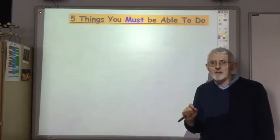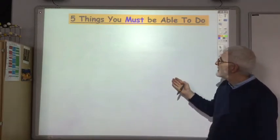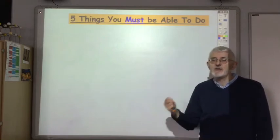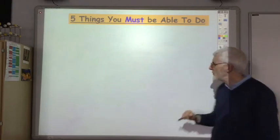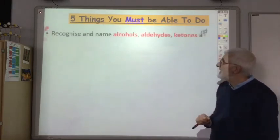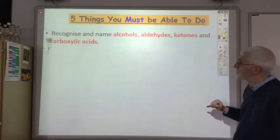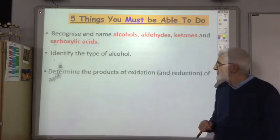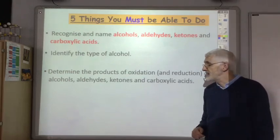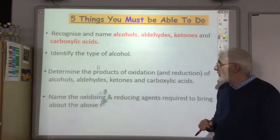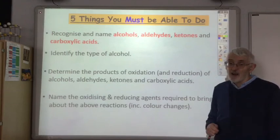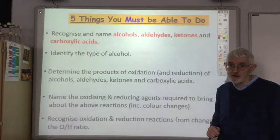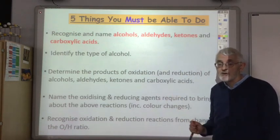At the end of this lecture, here are the key things you must know: be able to recognize and name alcohols, aldehydes, ketones, and carboxylic acids; identify whether an alcohol is primary, secondary, or tertiary; determine the products of oxidation and reduction of alcohols, aldehydes, ketones, and carboxylic acids; name the oxidizing and reducing agents required including the associated color changes; and recognize oxidation and reduction reactions from changes in the O-to-H ratio.